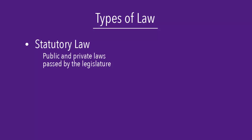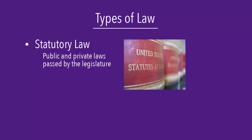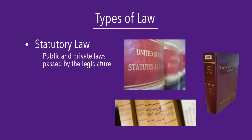The publications associated with statutory law include the Statutes at Large, which contain all the laws enacted within a given congressional term. Every six years when the law is codified, the U.S. Code is published. An example of statutory law at the state level is the Wisconsin Statutes, which are updated every two years. You can find these texts online or in print at Anderson Library.